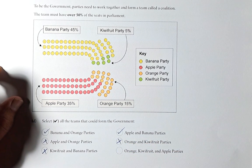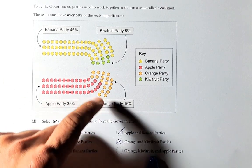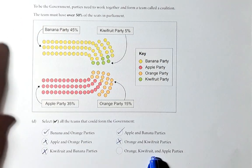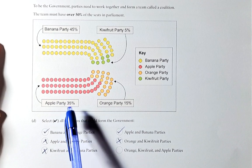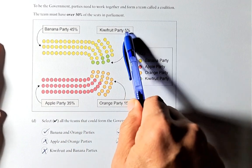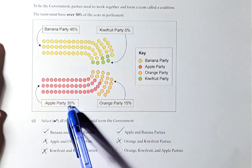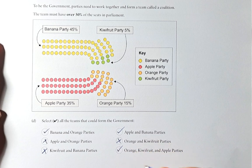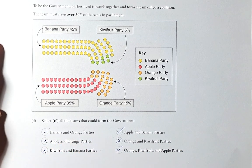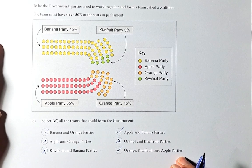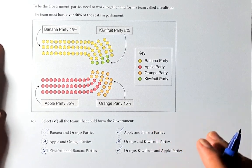Last but not least: Orange (15%) plus Kiwi Fruit (5%) is 20%, and Apple has 35%, so 20% plus 35% is 55% — they can form the government. So the combinations that can form government are: Banana and Orange, Apple and Banana, and Orange plus Kiwi Fruit plus Apple. The others cannot form a government.